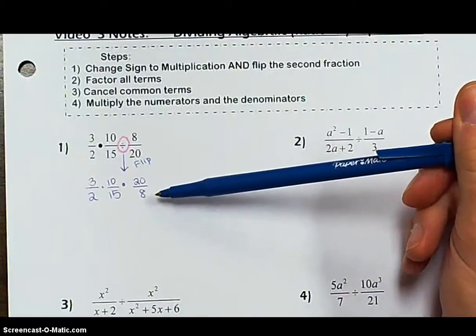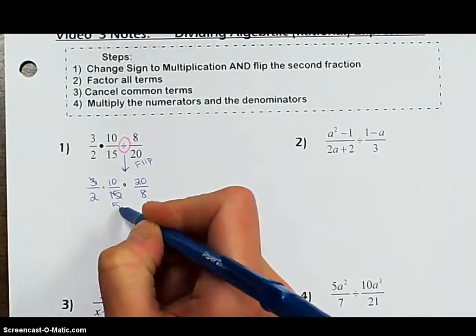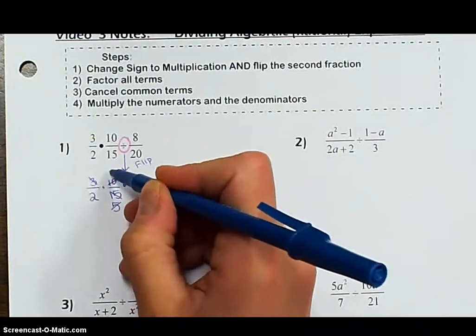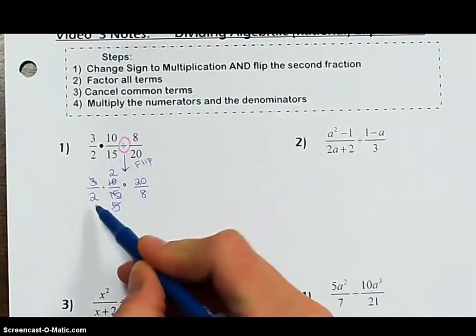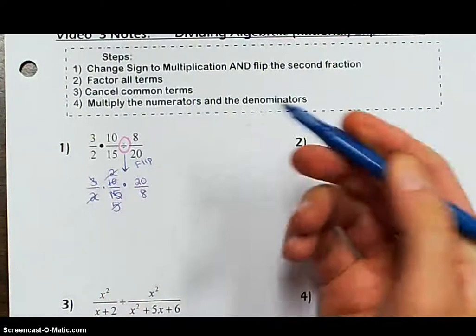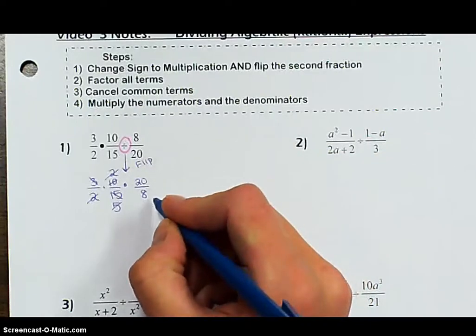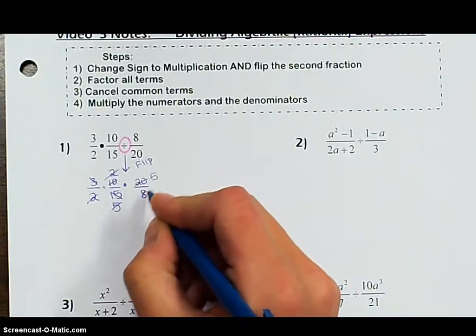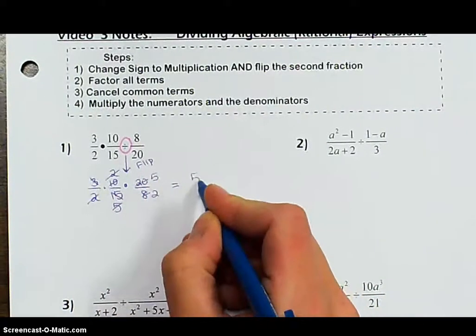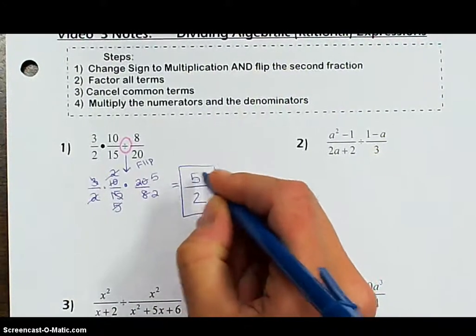Now that everything is multiplication, we're going to follow the rules for multiplying fractions. We're going to cancel anything in the numerator with anything in the denominator. I see 3 and 15 — 3 goes into 15 five times. Then 10 over 5 — 5 goes into 10 twice. I have a 2 on the bottom and a 2 on the top, those cancel. And 20 on the top and 8 on the bottom — both divisible by 4 — so 5 over 2. Our final answer is 5 over 2.